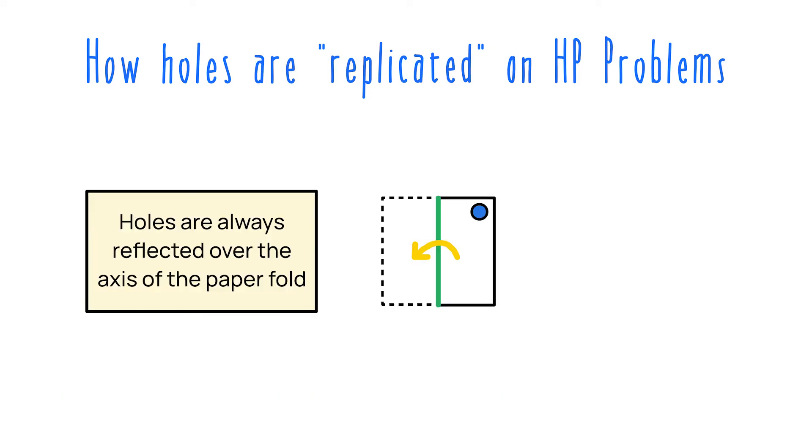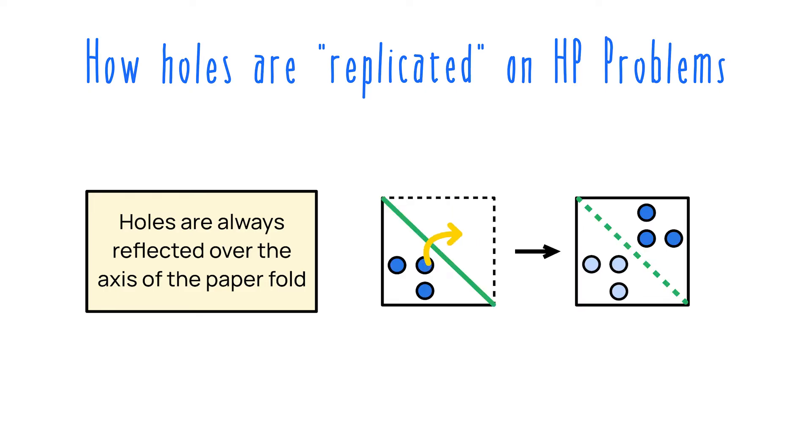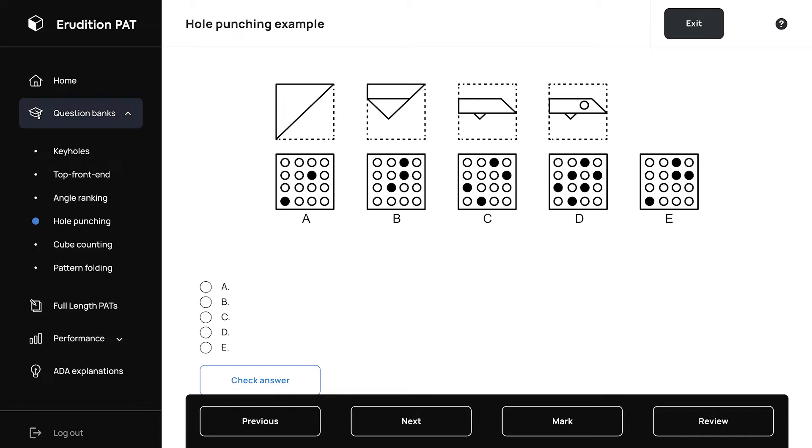It's important to notice that holes are always reflected over the axis of a fold. This makes them easier to track because the reflections are always symmetrical. And holes always end up the same distance from that axis on both sides. At first, I found it really difficult to figure out where a hole was going to end up, especially with some of these really funky diagonal folds. But once I learned to take things step by step and focus on one unfolding step and its axis at a time, hole punching problems became so much easier.